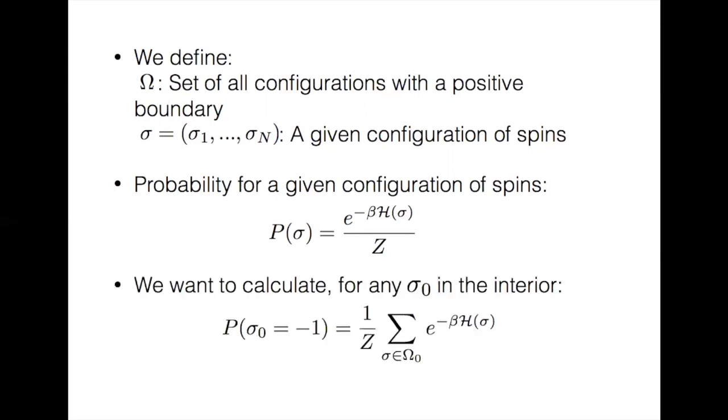Consider some sigma naught corresponding to a point in the interior of the lattice. We want to calculate for that sigma naught the probability that it is a downspin, which will be 1 over z times the sum over all configurations in omega naught of e to the negative beta h, where omega naught, which is contained in omega, is a set of configurations where sigma naught is negative 1.